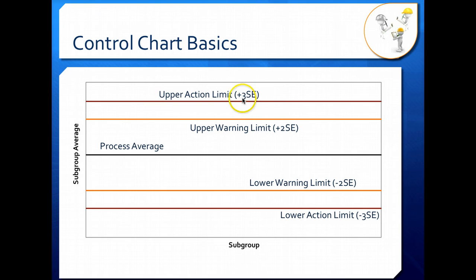Taking a look at these plus 3 SEs, plus 2 SEs, minus 2 SEs, and minus 3 SEs, that's actually how these lines are calculated. So SE stands for standard error, and that's the standard error of your process. It's a statistical term that we'll take a more close look at later, but basically your upper action limit is 3 times the standard error of your process. So as you can imagine, the bigger variation is in your process, the bigger your standard error is going to be, the more spread you have in your data. And so the further your action limit lines are going to be from your process average.